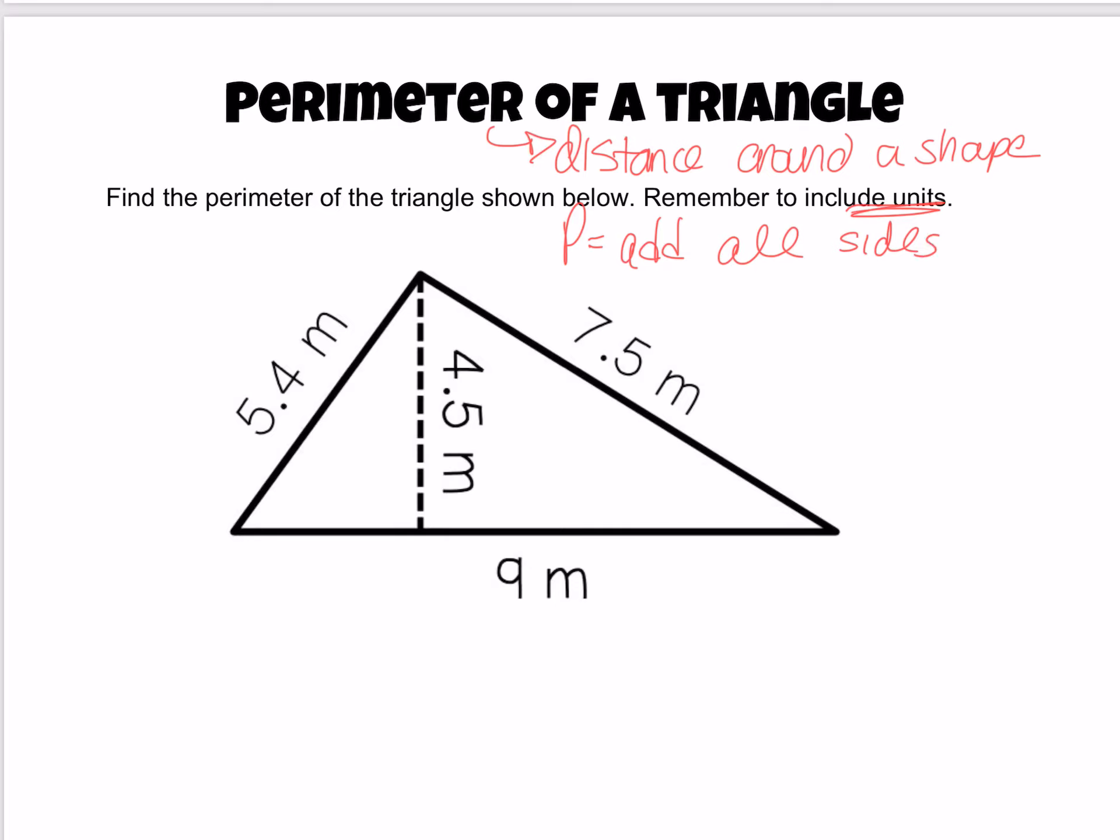When we're talking about a triangle, we need to add three sides. You might also see this written as perimeter equals side one plus side two plus side three.